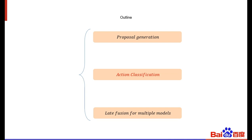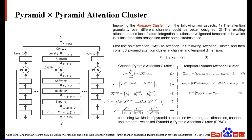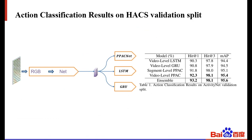The next part is the action classification network. We propose the double pyramid attention network. Since we obtain snippet-level features, we can use LSTM, GRU, and PeckNet for final classification by modeling temporal information. The top-1 and top-5 accuracy are shown in Table 1. Our video-level PeckNet achieves the best performance in classification, and the ensemble results got improved for this challenge. We adopt the ensemble results as the action prediction combined with our proposal generation for action detection.